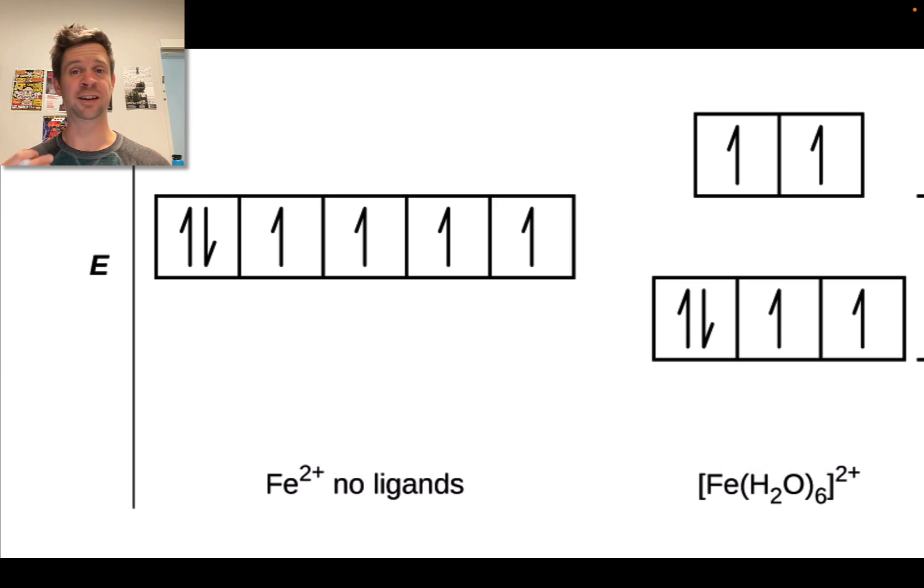Iron 2 plus is a d6 cation, d electron count of six. Double check the periodic table if you need to verify that. And so to fill the degenerate, the five degenerate d orbitals in the naked or bare cation, we just follow Hund's rule, avoiding pairing as much as we can to get this electron configuration.